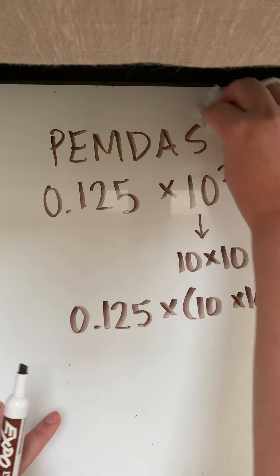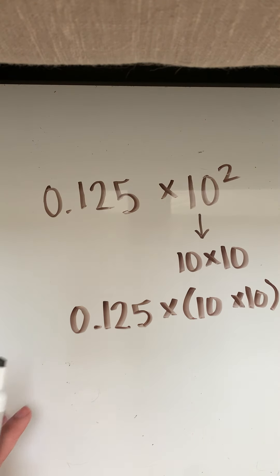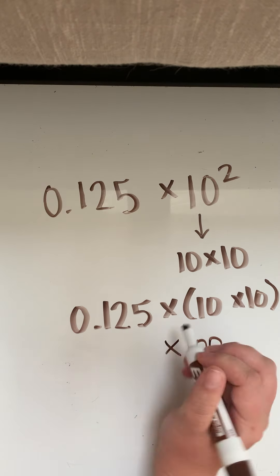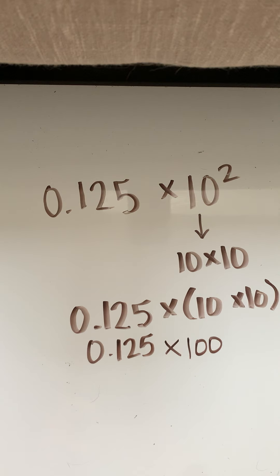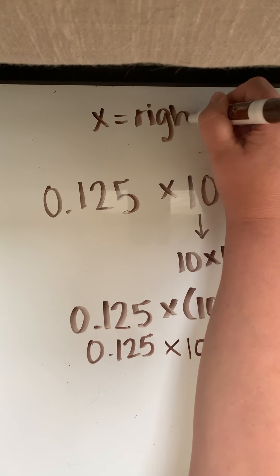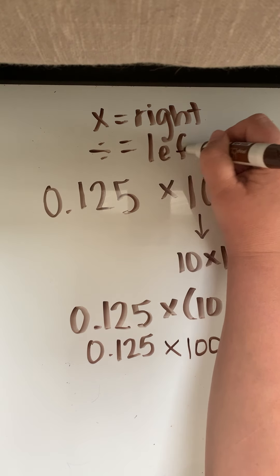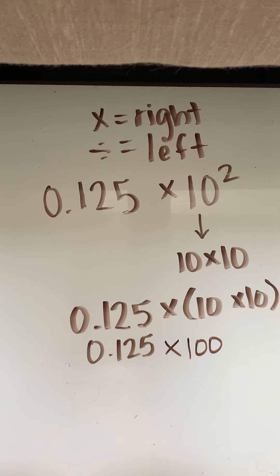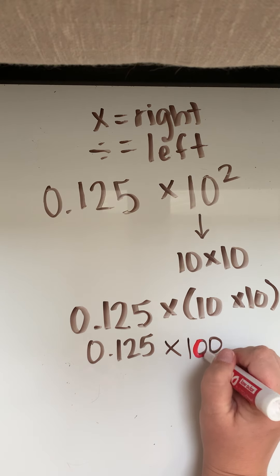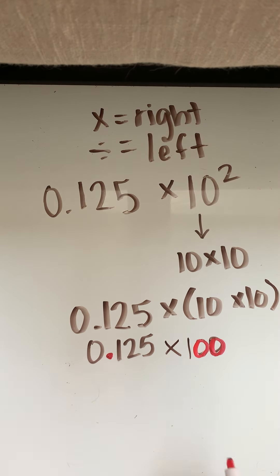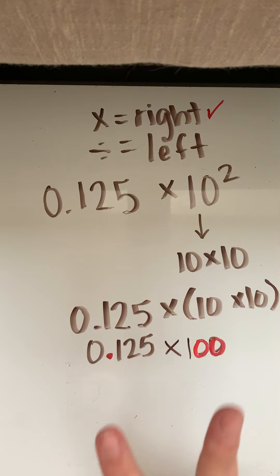So we've got to make sure to do our parentheses first. What is 10 times 10? That's 100. So I am going to rewrite that first and then bring my decimal down. We know from yesterday that when I multiply, I move my decimal to the right, and when I divide, I move my decimal to the left. I'm multiplying right now, so I'm going to take a look at my 100. How many zeros do I have? I have two.